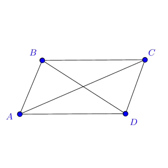Vertices are the corners of any figure. Here in quadrilateral ABCD, point A, point B, point C, and point D are the vertices. So the properties of a quadrilateral are: 4 sides, 4 vertices, 4 angles, and 2 pairs of diagonals.